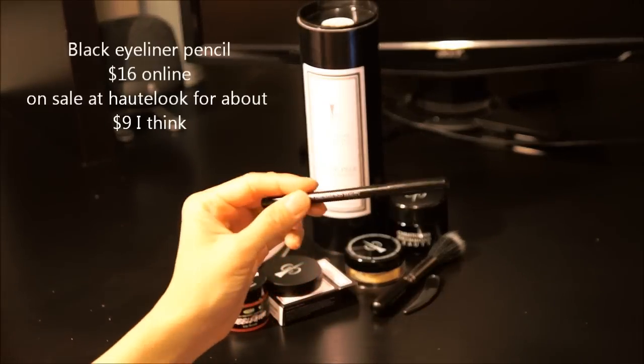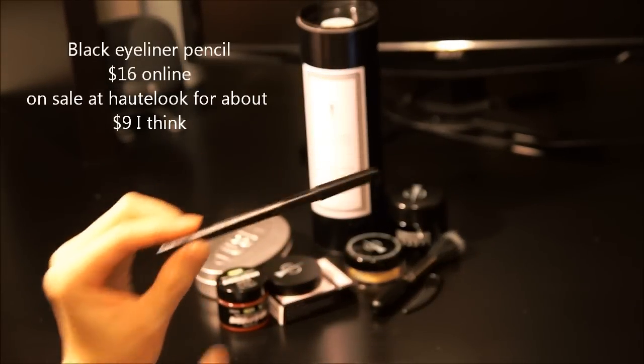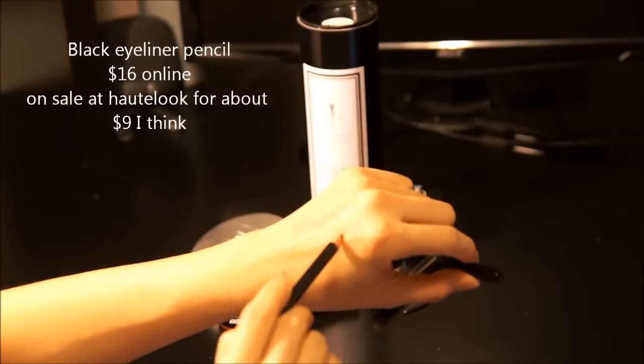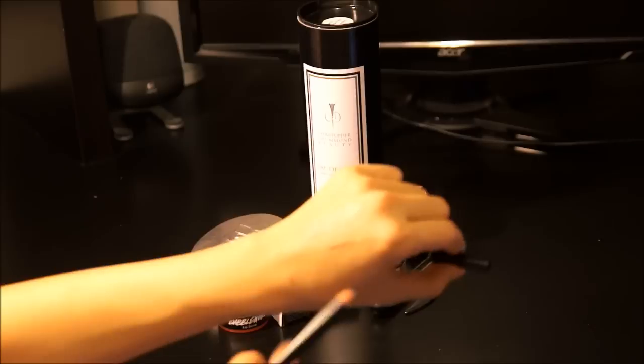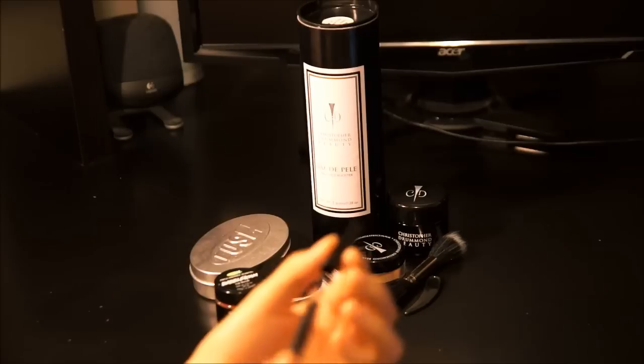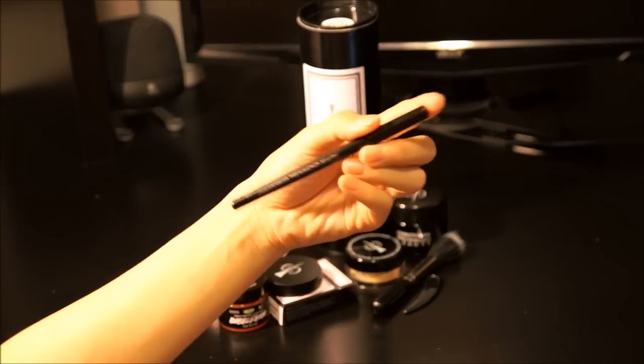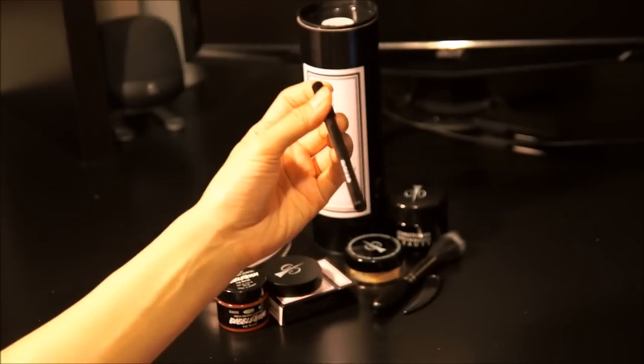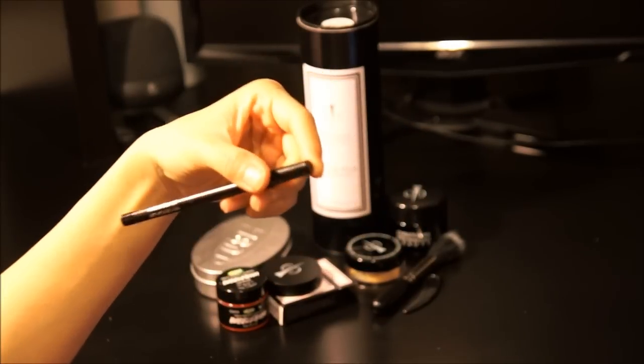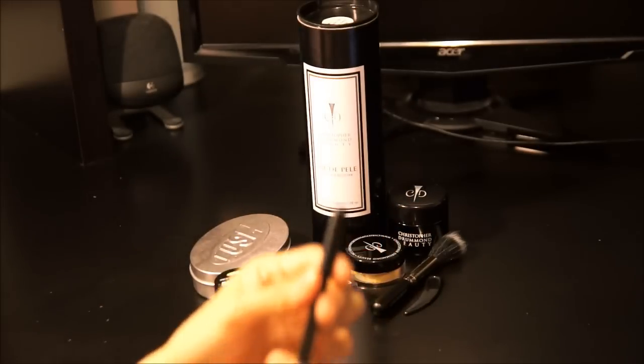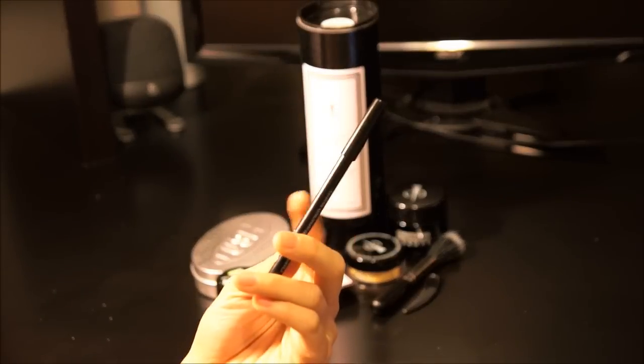The last thing that I got is this eye pencil from Christopher Drummond Beauty. It's just a black eyeliner and it's a pencil eyeliner. You can use it to build up the color black, but I just like to use it very lightly. I think it's a great eyeliner. It's again, all natural organic, has really good ingredients, no harsh chemicals like a lot of the other eyeliners. I really think this is a really good product and it has a lot of product here, so it will last me a really long time.